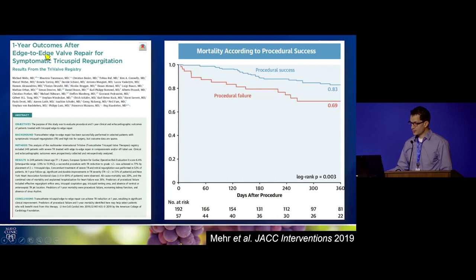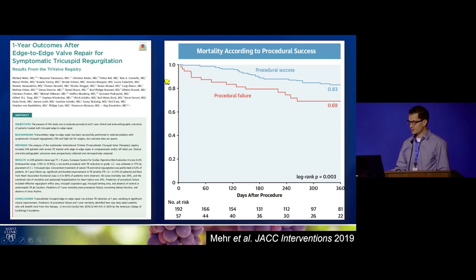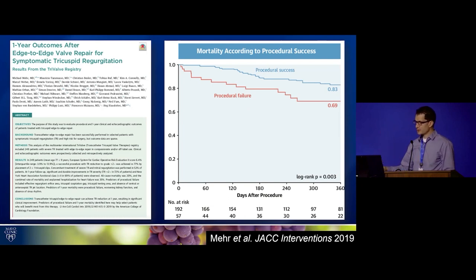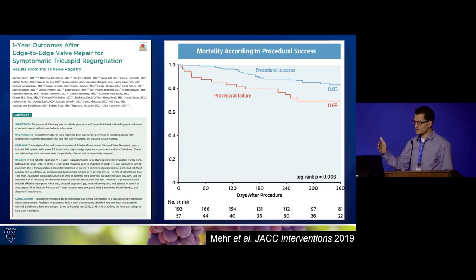A registry study of off-label MitraClip use for tricuspid edge-to-edge repair defined success as moderate or less TR. Those who achieved moderate or less TR tended to do better than those left with more than moderate TR — at least a signal that even getting TR down to moderate may benefit non-surgical candidates.